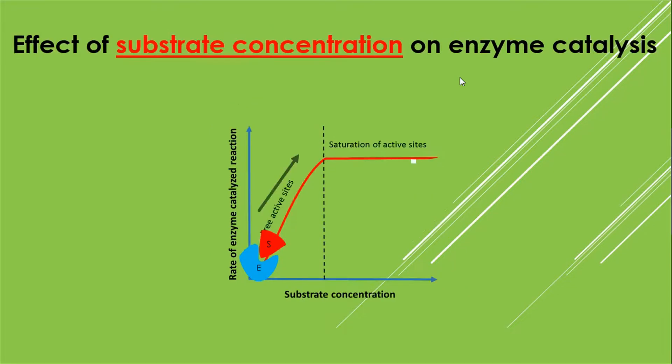Third factor is substrate concentration. An increase in substrate concentration increases the rate of enzyme catalyzed reaction. If the concentration of enzyme is kept constant and substrate quantity is increased, a point is reached where the rate of reaction is no longer increased by any subsequent increase in the substrate.